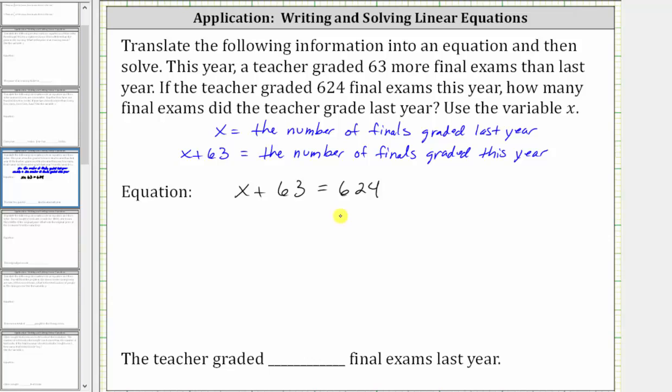Now if we solve this equation for x, we can determine the number of finals graded last year. In order to solve the equation, we need to isolate the variable on one side, which means we need to undo the plus 63 by performing the opposite operation to both sides. To solve for x, we subtract 63 on both sides of the equation.